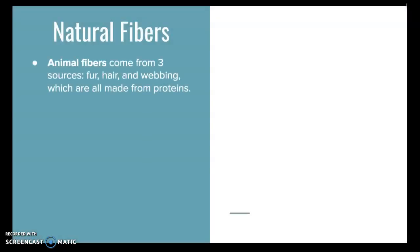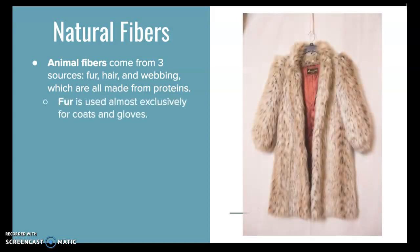Animal fibers come from three different sources: fur, hair, or webbing, and these are all made from proteins. Fur is used almost exclusively for coats and gloves, such as mink fur or fox fur.